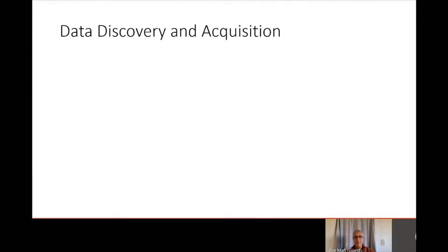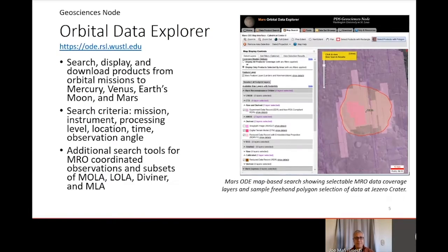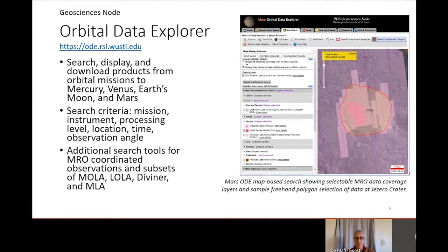The Orbital Data Explorers, or ODEs, allow data users to search, display, and download products from Mercury, Venus, Earth, Moon, and Mars. Users can search using criteria such as mission and instrument name, data processing level, location, time, observation angle, and many more parameters. There are additional search tools for MRO coordinated observations and subsets of MOA, LOA, Diviner, and MLA. The ODEs are available on the PDS Geosciences website.